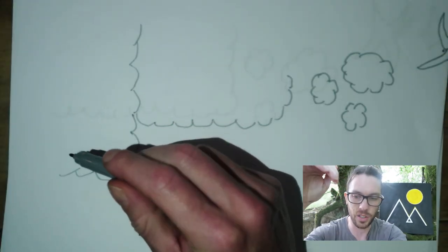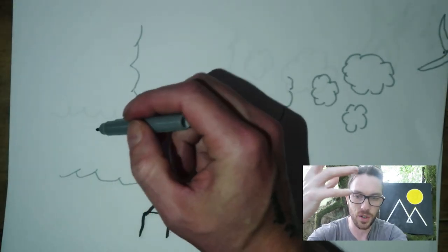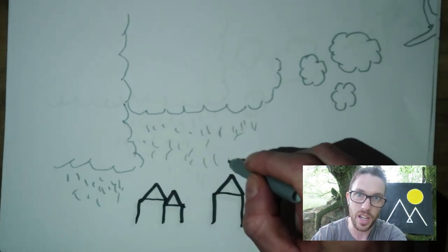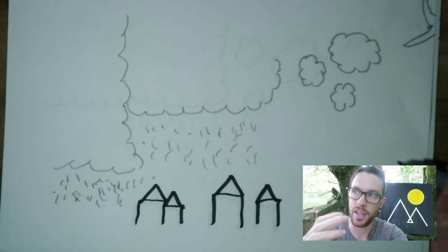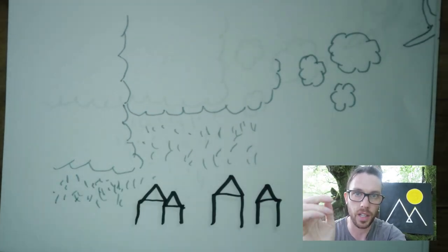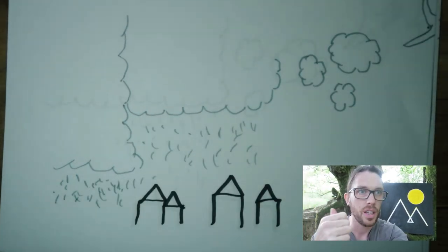The nimbostratus kind of looks like it's trying to reach down to the earth and can sometimes look like a big wall of cloud. Generally what you're going to get with a warm front is a prolonged rainfall that can sometimes last for days.